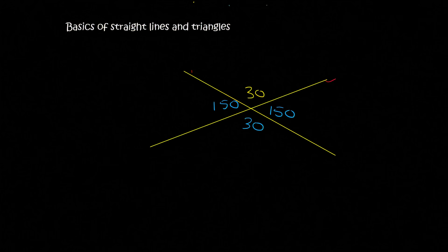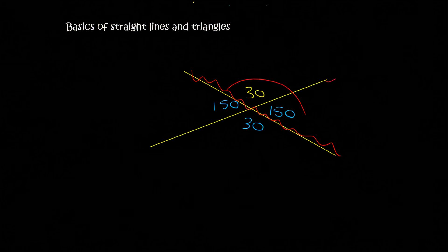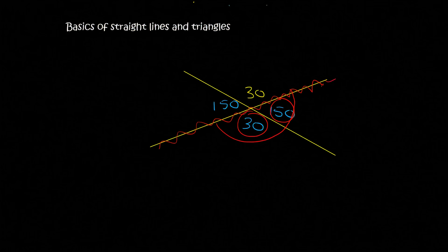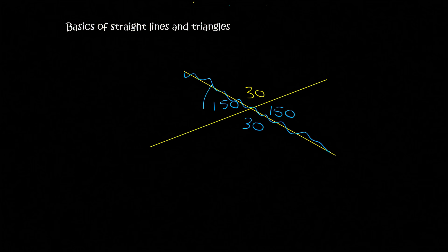If I look at this line over here and I look at these two angles, they add up to 180. If I look at this line over here and I look at these two, they add up to 180. And then if I look at this line over here, on this side, they add up to 180 because that's a straight line.